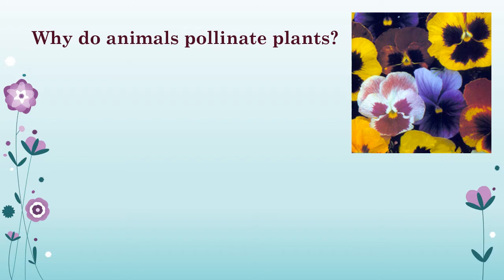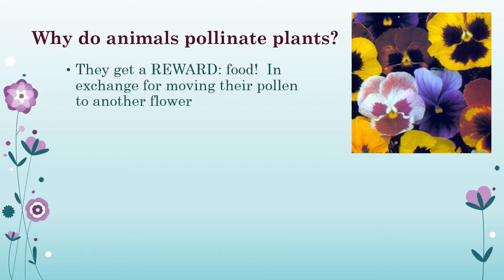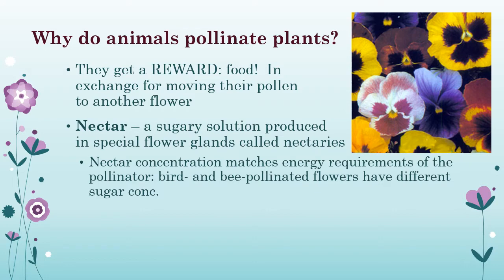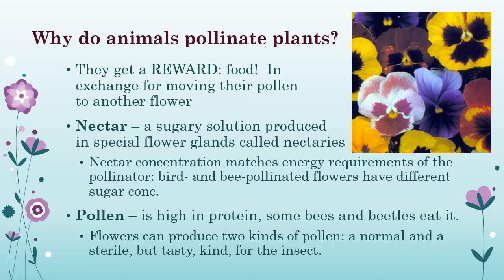So why do animals do this work for the plants? Well, they get a reward. They're getting either nectar — a sugary solution which the plants produce in nectary glands — and plants can actually match the energy requirements for the particular animal with the amount of sugar in their nectar, producing the sugar with photosynthesis. Pollen is also very high in protein; bees and beetles will eat it. Some flowers actually have two different types of pollen: one with sperm to be transferred, and another that's very nutritious for the bee to eat.